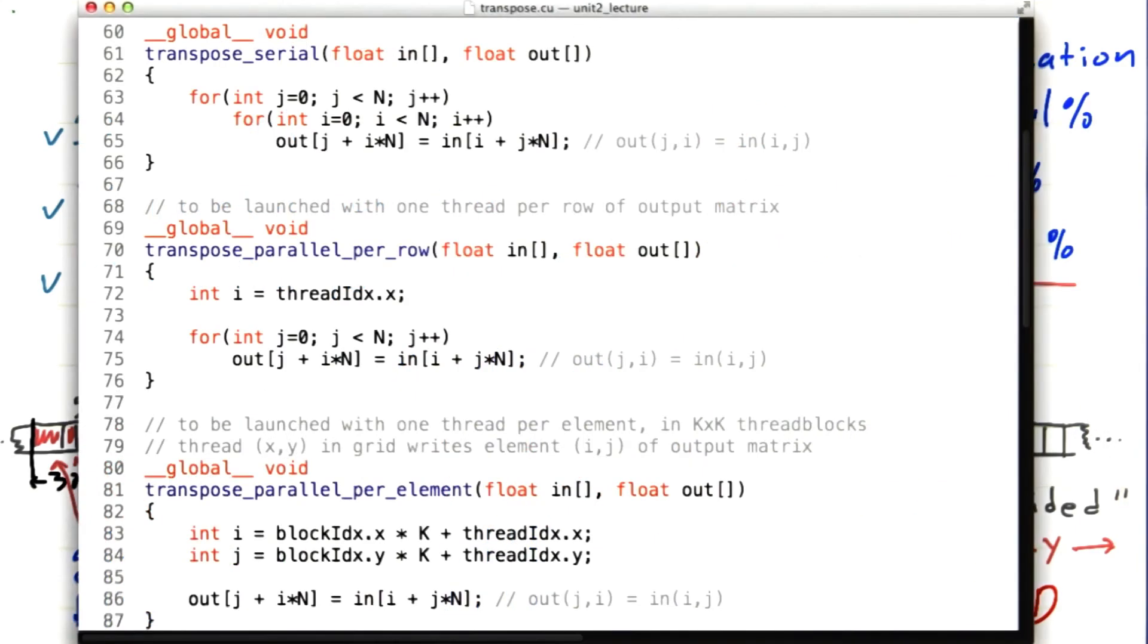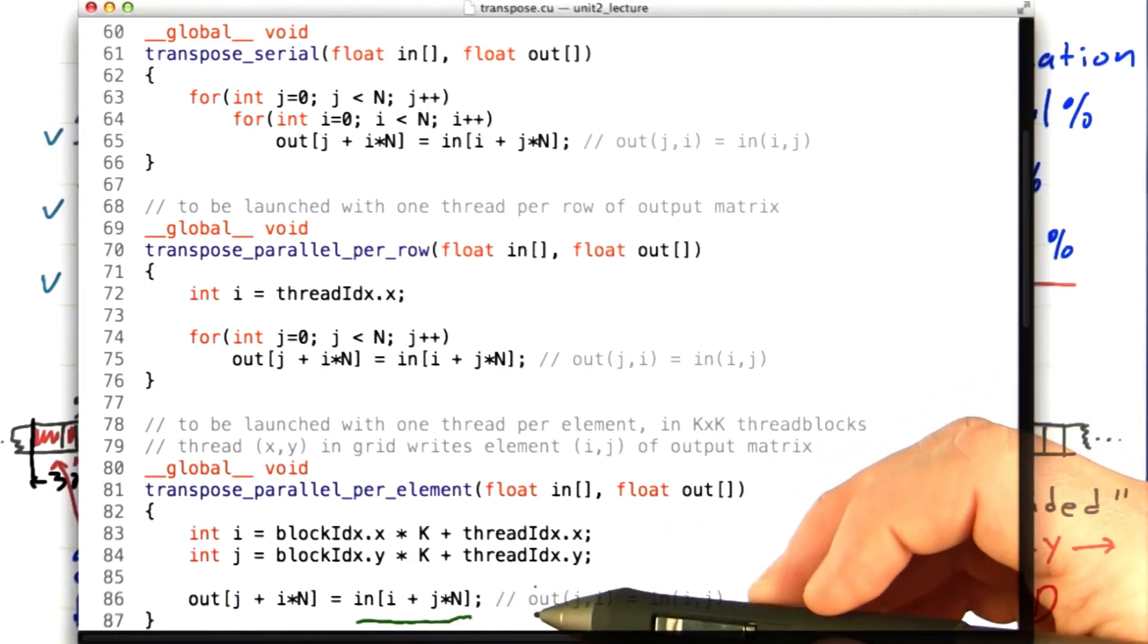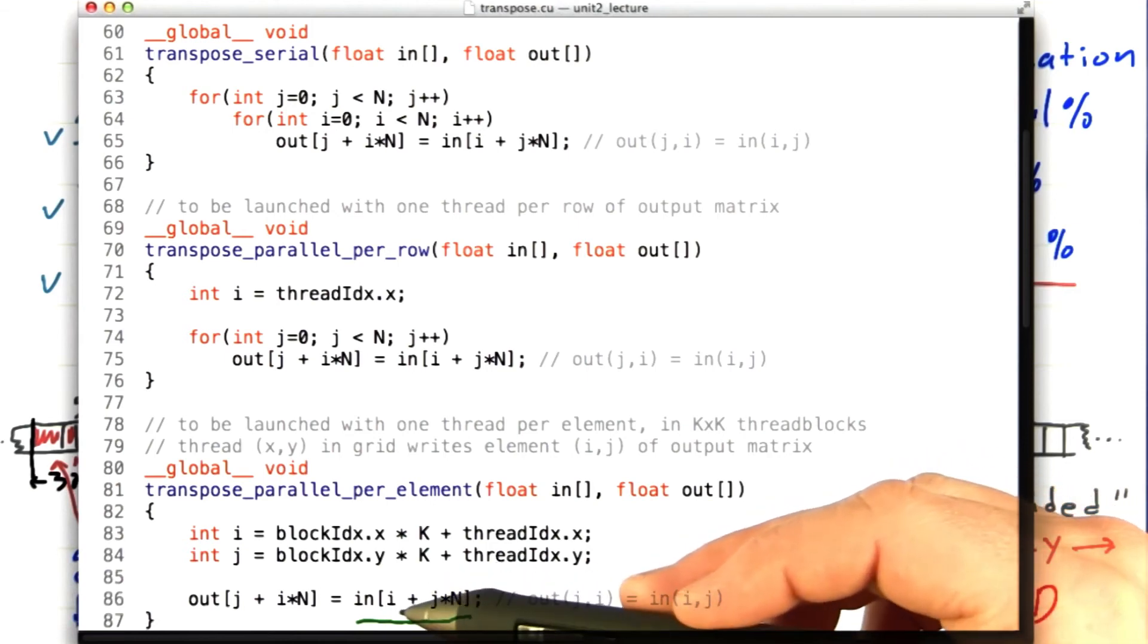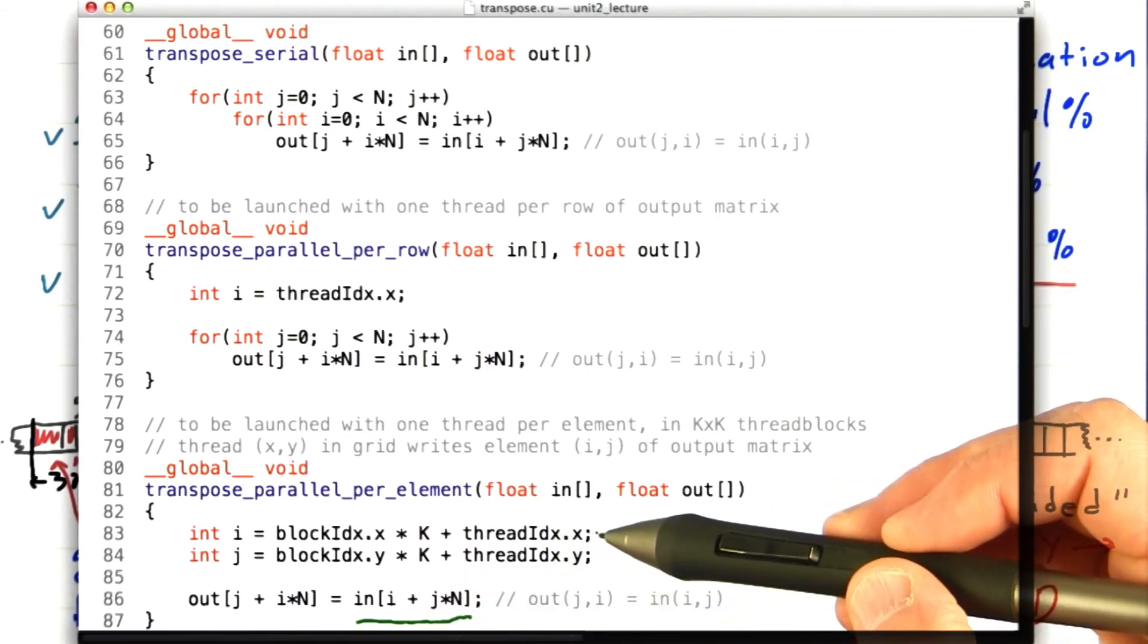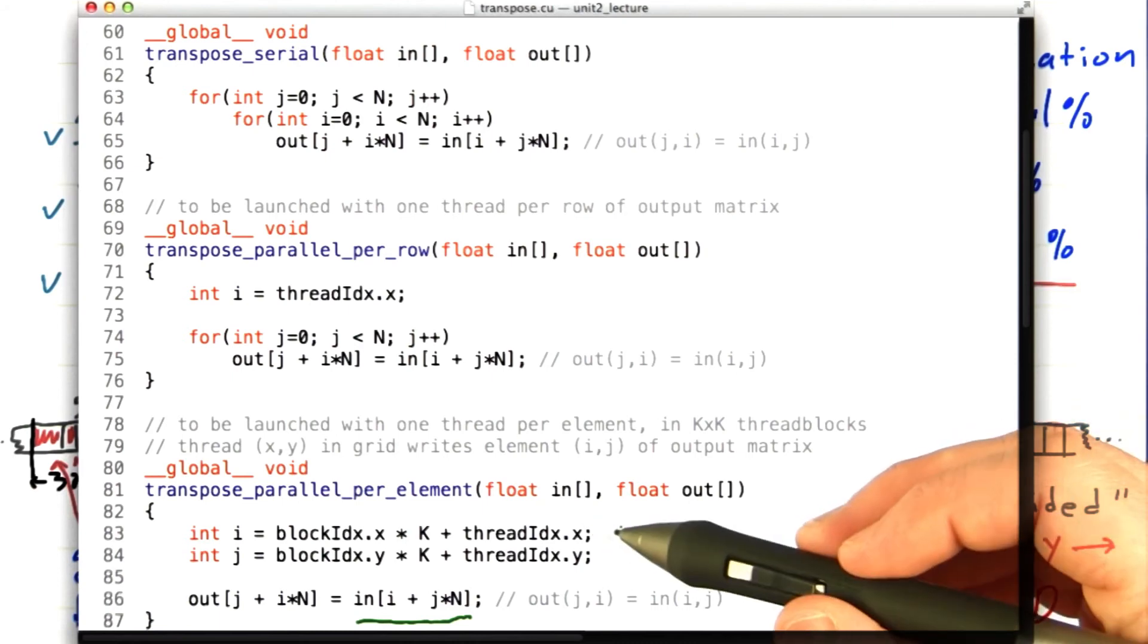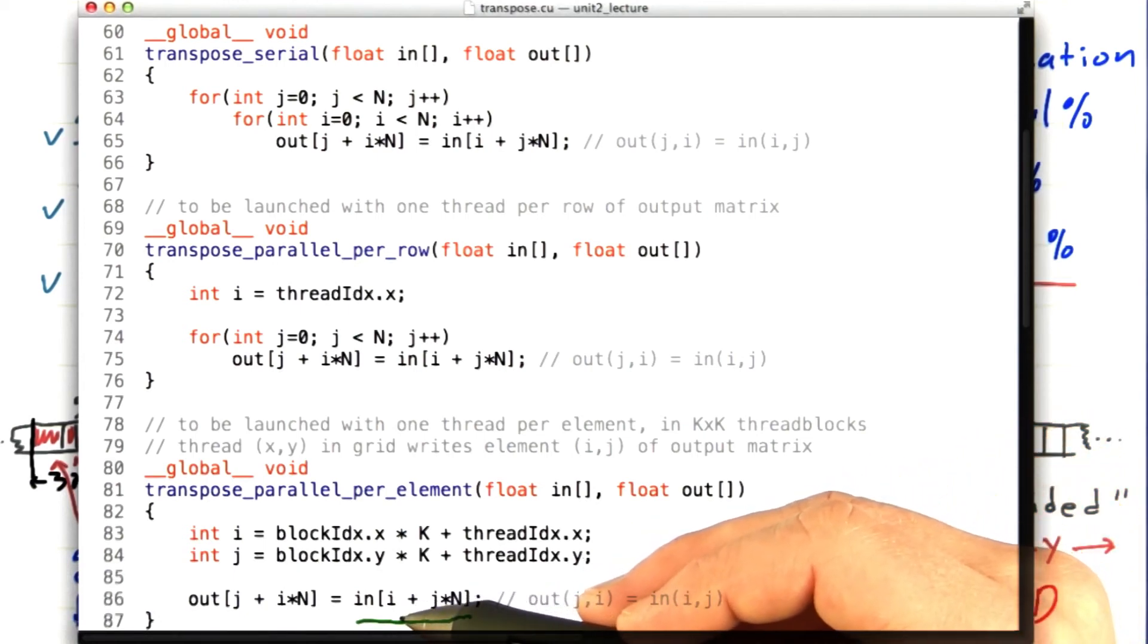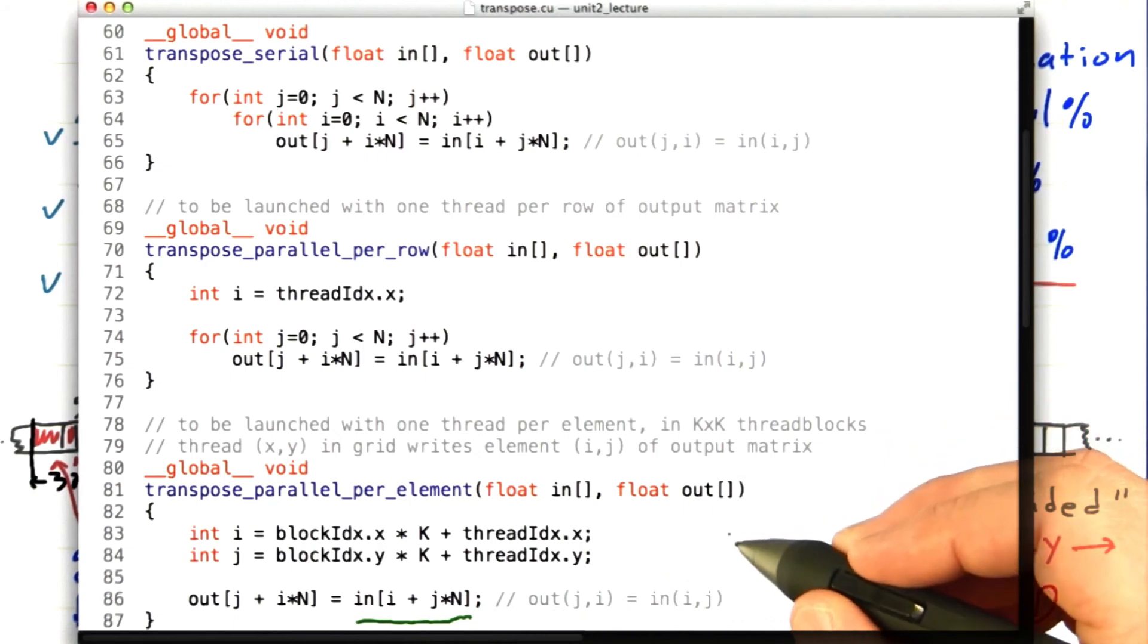So let's look at the code for our kernels. Here's where we're reading from the input matrix, and this actually works out pretty well. Every thread is reading a value in memory which is equal to some large offset, j times n, plus i. And if you look at i, i is really the thread index plus some offset. So adjacent threads, threads with adjacent thread indices in x, are reading adjacent values of the input matrix. That's exactly what we want. So this is good coalescing.